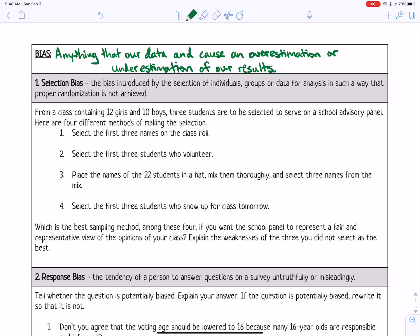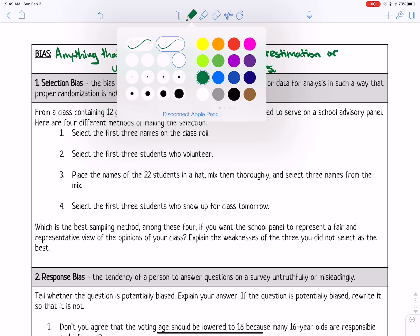Selection bias and response bias are the only two that we look at in Math 3, but in AP Stats there are more types of bias that you would look at. So let's just talk about selection bias. Selection bias is the bias introduced by the selection of individuals, groups, or data for analysis in such a way that proper randomization is not achieved. In other words, you did not gather a random sample. That would be selection bias.